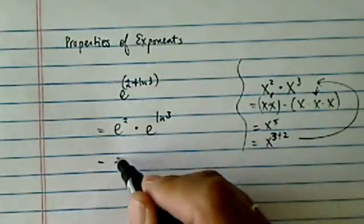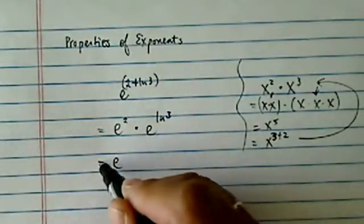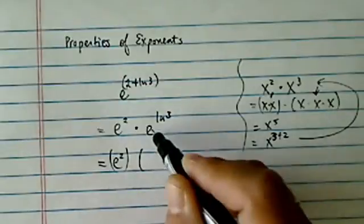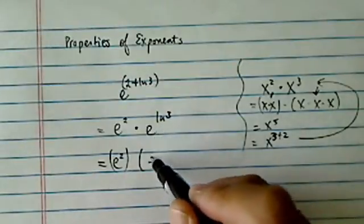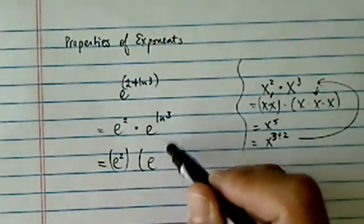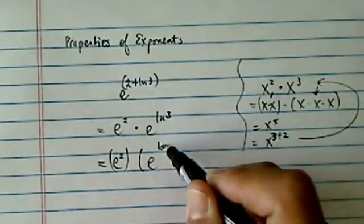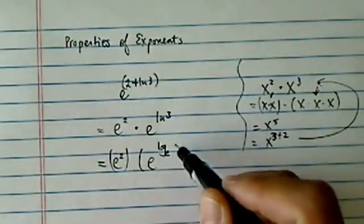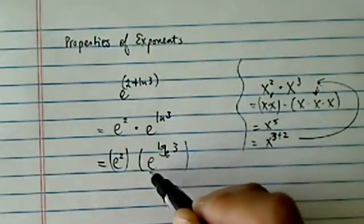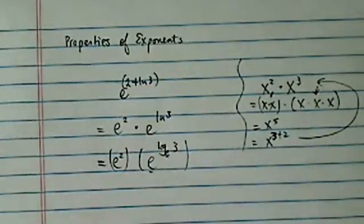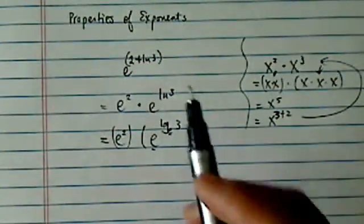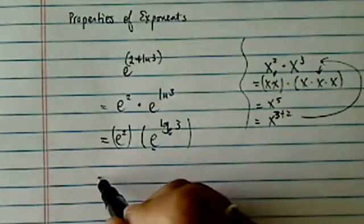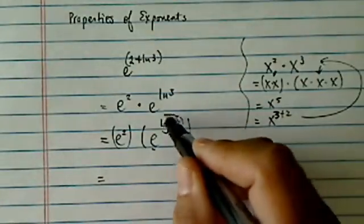And then e to the square is left alone. When the natural log — which is really the natural log of base e — when the base matches the base here, the thing cancels out.